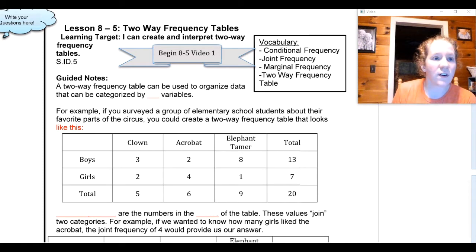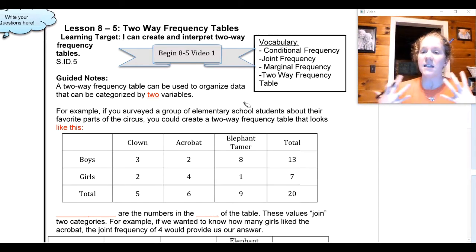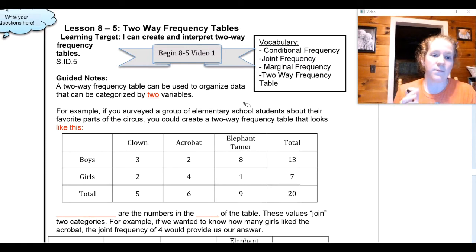For this first video, a two-way frequency table can be used to organize data that can be categorized by two variables. It is exactly what it sounds like. It's a two-way frequency table because I got two different things that I want to display data about.